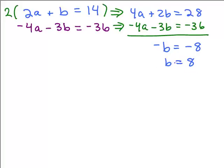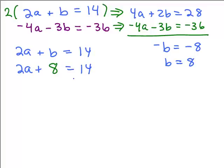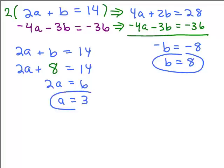We know B equals 8. Now we need to go back up to one of these two equations and figure out what A is. Taking the first equation 2A + B = 14 and substituting 8 in for B gives 2A = 6, so A = 3. A stood for the price per pound of the apples.